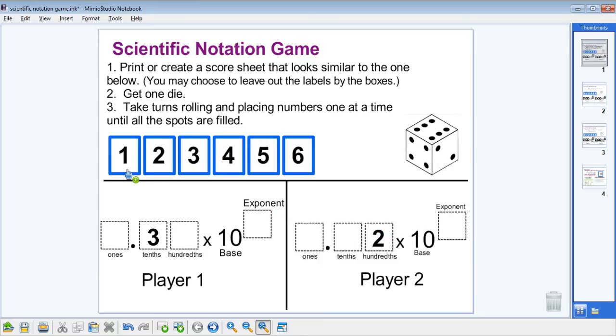We might consider filling in the rest of those. A one in the hundredths place. Perhaps next we have a one rolled in the tenths place. Player one rolls next and rolls a four, deciding to put it in the exponent place.